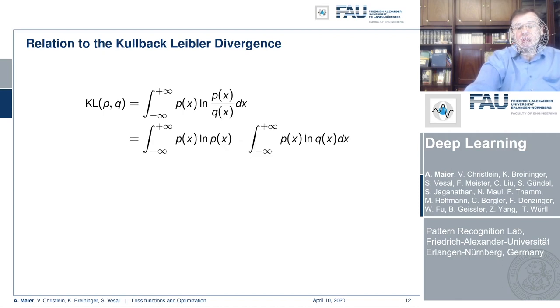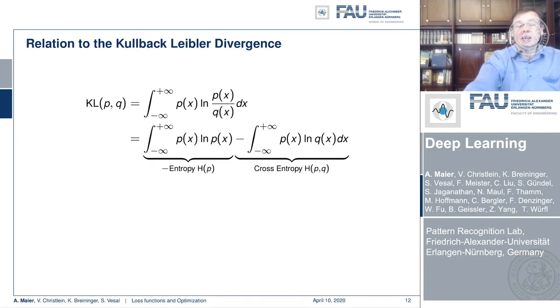Using again the property of the logarithm. We get the minus part on the right-hand side, and the minus part on the right-hand side is the cross-entropy, and the left-hand side is simply the entropy.